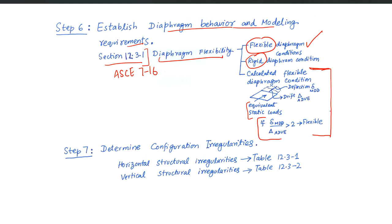This is one decision which you have to take before applying any analysis procedure. You can check Section 12.3.1 for more details about diaphragm flexibility. Step 7 is to determine the configuration irregularities. There are two types defined by IBC 2021: horizontal structural irregularities defined in Table 12.3-1, and vertical structural irregularities defined in Table 12.3-2.